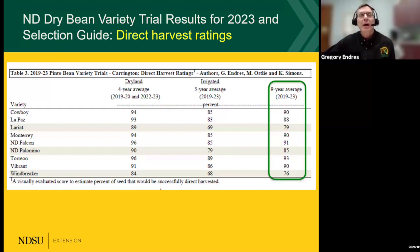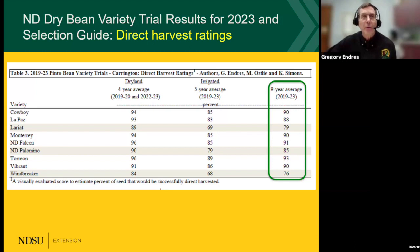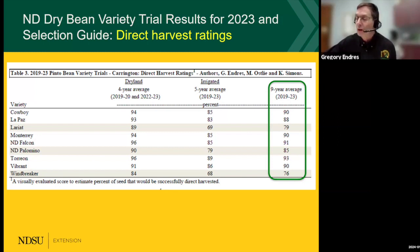We do have many of the newer varieties with limited numbers. If you look in the guide, you'll see the Carrington data from this past season, both dryland and irrigated. We include some of the newer pintos such as N.D. Rodeo, and we also have information on other market types and corresponding varieties, so I hope you'll make use of that information.